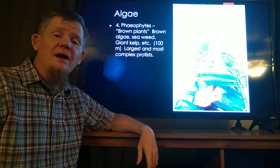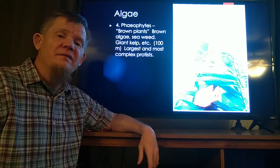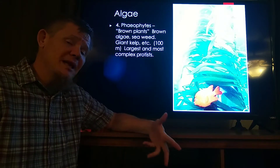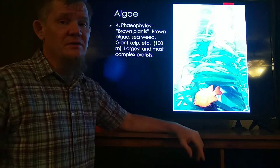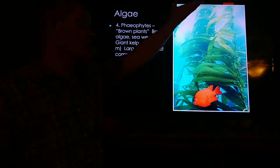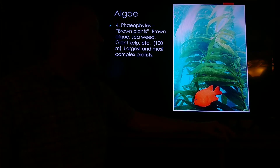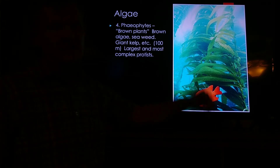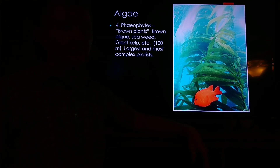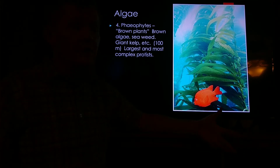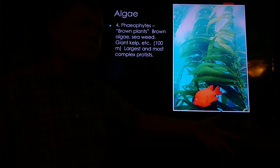Our next group of algae are called phaeophytes. Pheo means brown, phyte means plant, so the name means brown plant. These aren't plants. This is kelp — giant kelp. There are giant kelp forests off the coast of northern California. Kelp can be as long as 100 meters — longer than a football field — and we're talking about a protist.